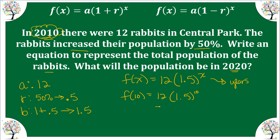So 1.5 raised to the 10th times 12 gives us our result. We're talking about animals, so you can't have a partial animal. Mathematically we'd round up to 692, but since we can't have a partial rabbit, we round down to 691 rabbits. Make sure your answer makes sense contextually — always consider what your context is.